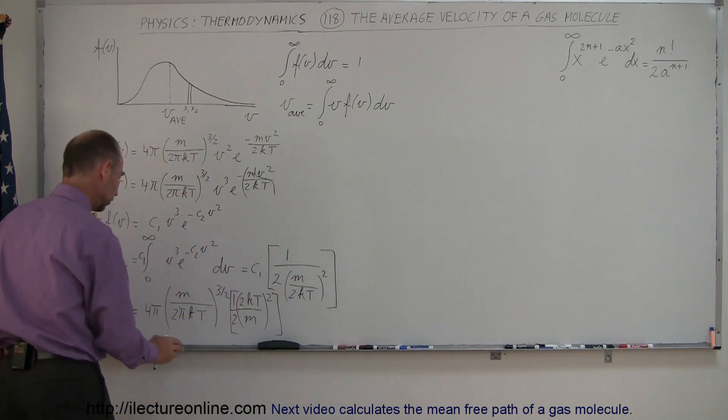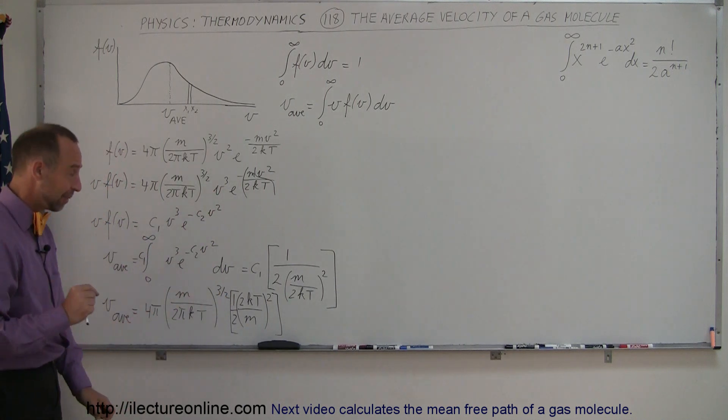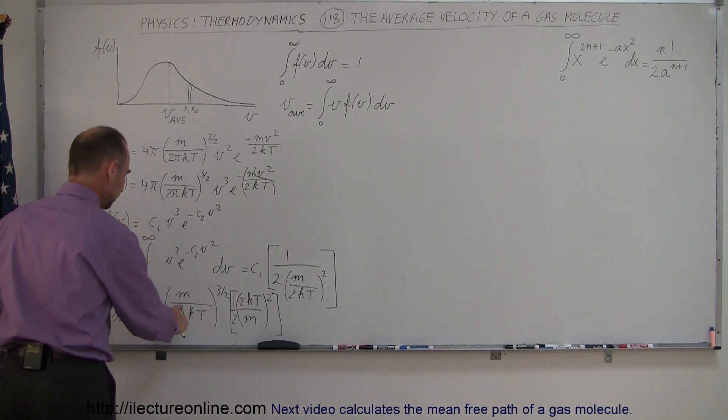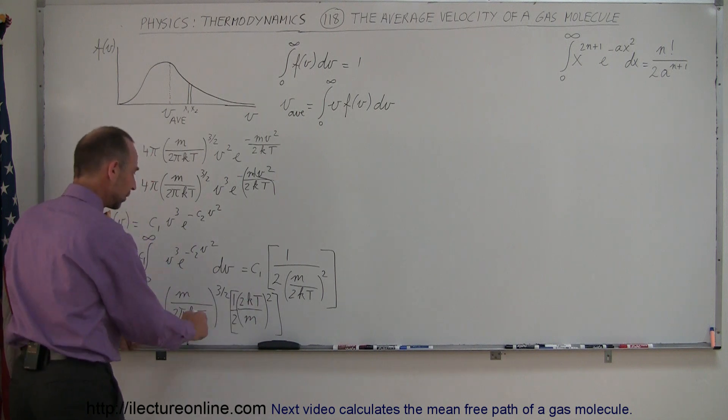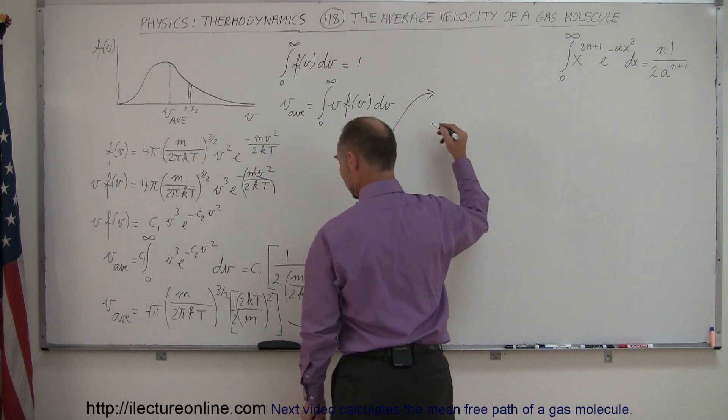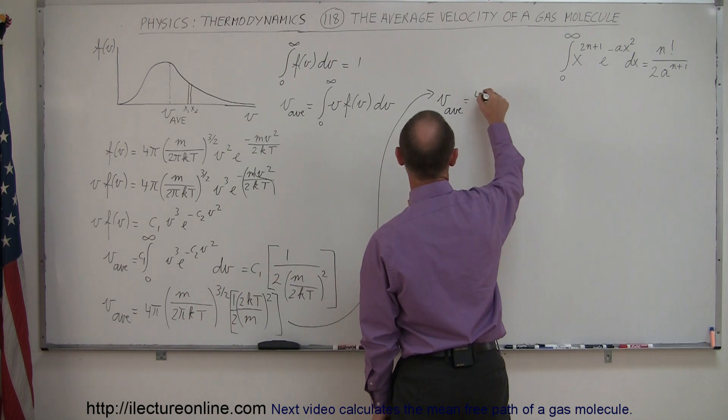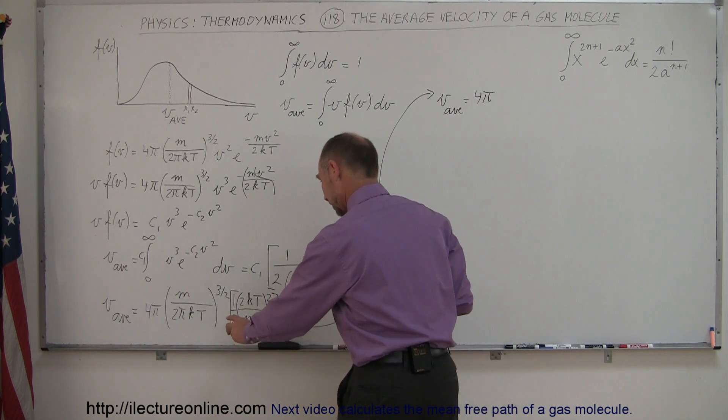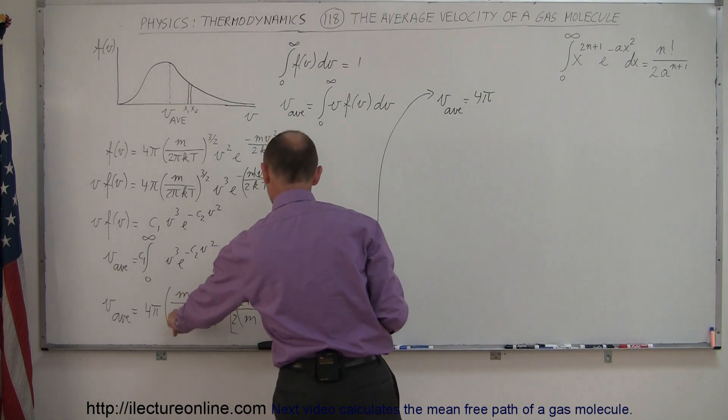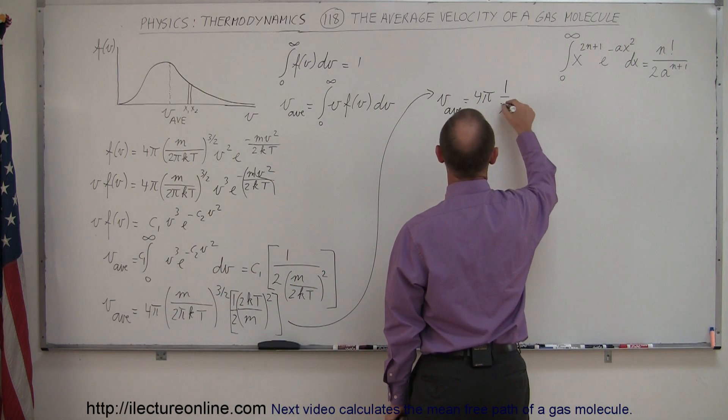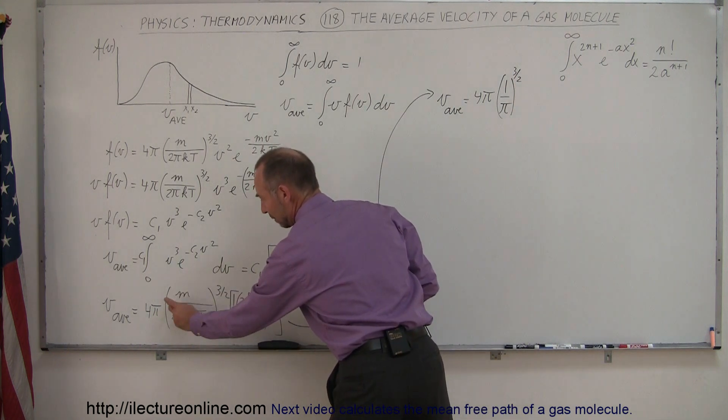I have the 1 half, so all that looks good, and this right here was this constant right there. Now all I have to do is algebraically simplify that, and I have my V average. Let's see here, I have an M and an M, I have a 2KT and a 2KT, so look at all the similarity. I'm going to rewrite this equation just a little bit better, right here. So we have V average is equal to, I still have my 4π, I'm going to put the 3 halves to 1 over, so we have 1 over π to the 3 halves power.